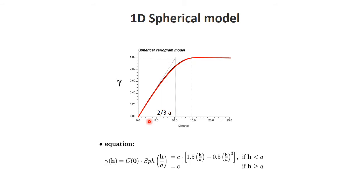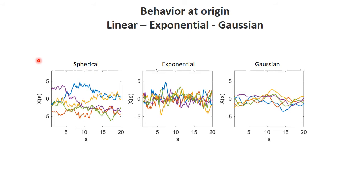We've seen this kind of behavior already in many of our previous variogram calculations. It starts at 0, and importantly, the tangent to the origin is simply a straight line. Then it levels off and becomes constant at a certain point which we call A — the range. If we look at this behavior at the origin, signals like this would all have a spherical variogram. If you calculate the variogram of these signals, you'll find that they behave linearly at the origin.